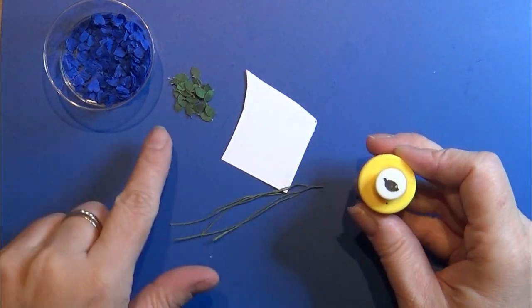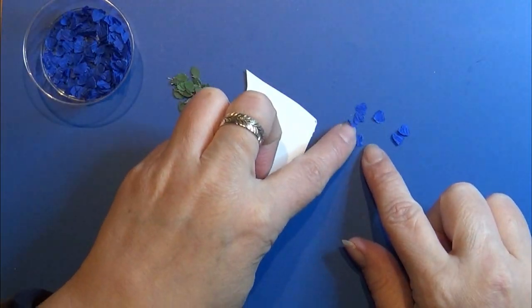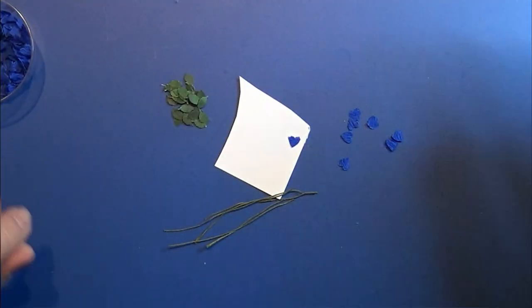I'm going to make some roses and for that I'm using this leaf cutter and cutting some out of a piece of paper that I painted green on both sides.